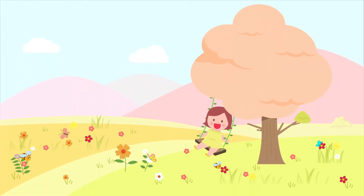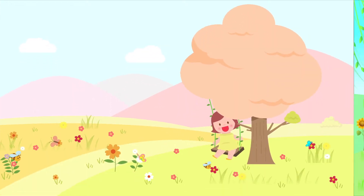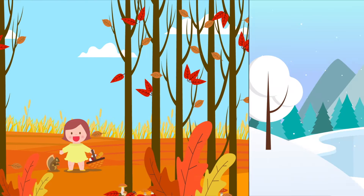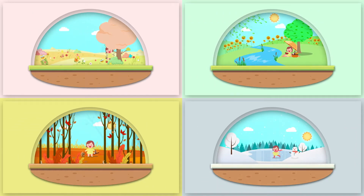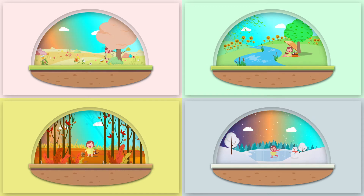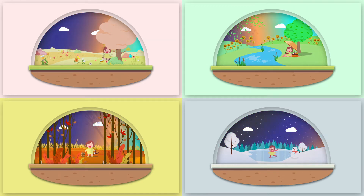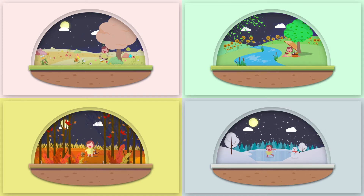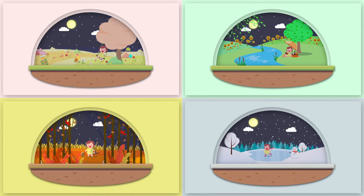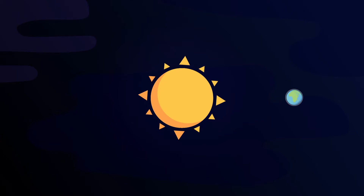There are four seasons: spring, summer, fall, and winter. The sun's rising point and setting point, and the length of the day and night, changes depending on the season. When the sun sets and night arrives, we are able to observe numerous stars. The changing seasons also change the stars we are able to observe. Let's learn more about what brings about these changes.